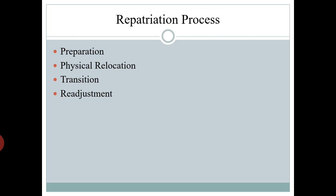These are the four stages required for repatriation. To review: the company sends someone to a host country for completing an international assignment. Whenever that person completes the assignment or there are issues in the international market, the person returns back to the home country — this process is called repatriation. With this, we conclude this lecture. Thank you.